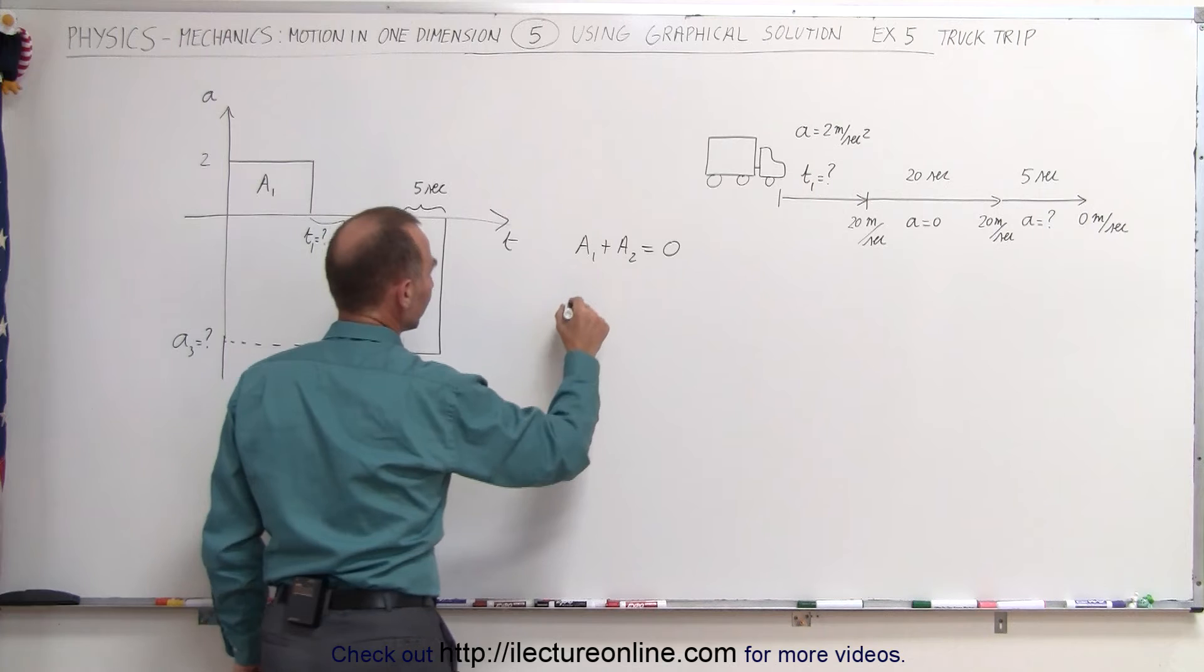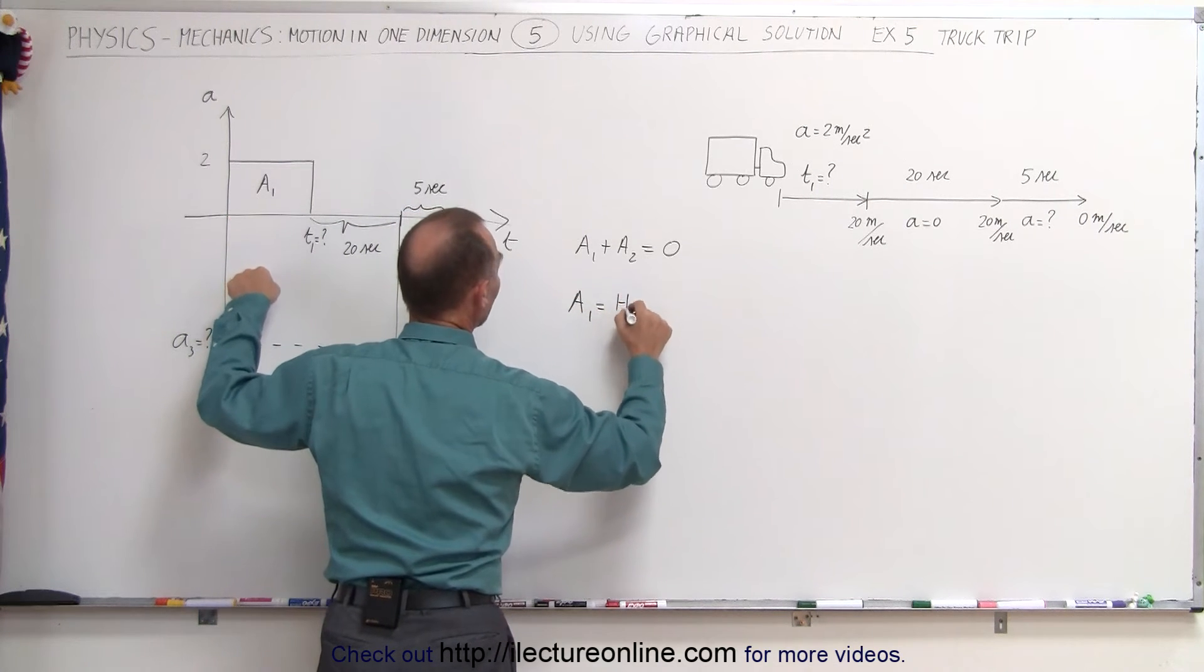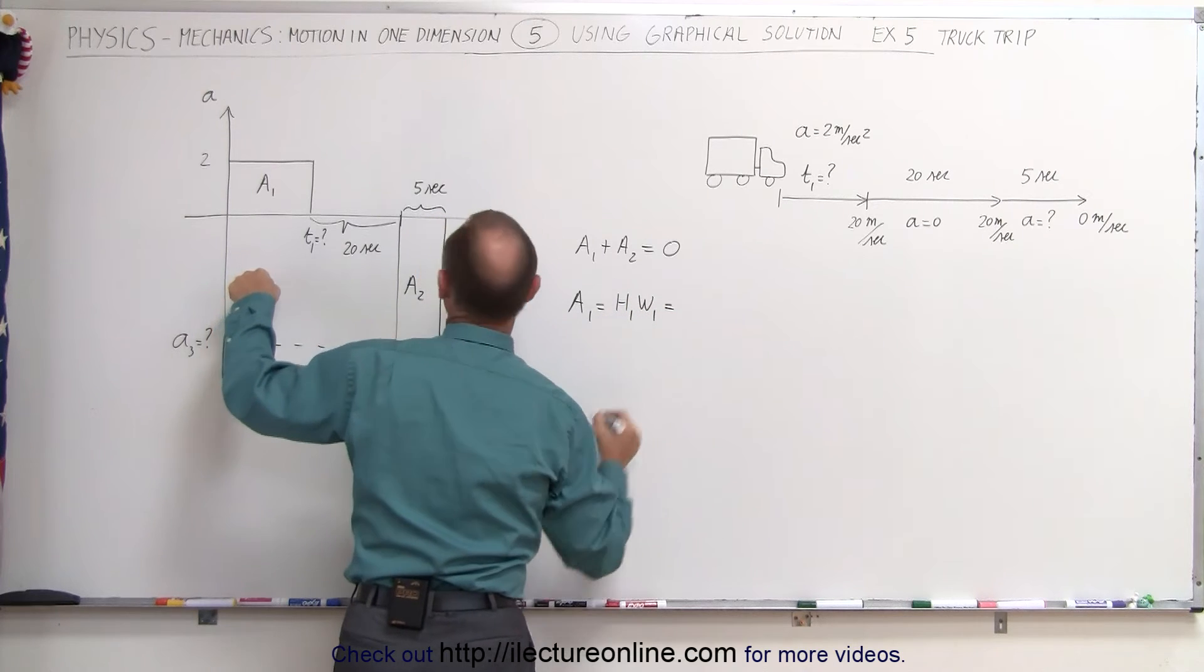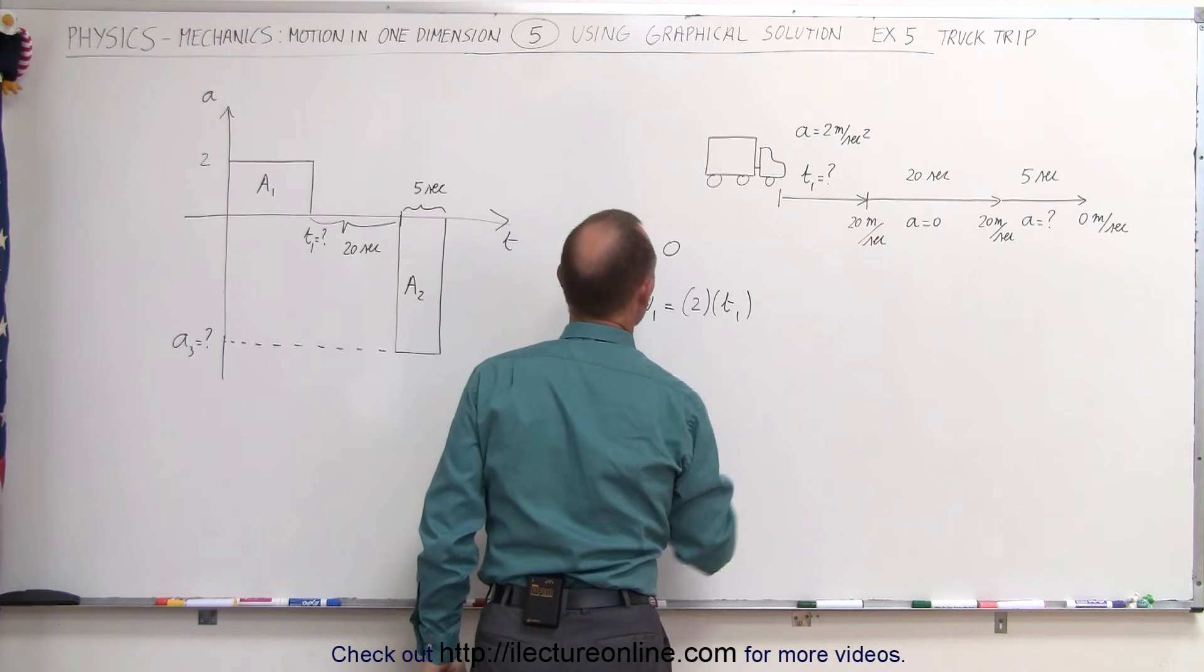And a1 is equal to the height times the width, that would be h1 times w1. The height would be 2 meters per second squared and the width would be t1 which we don't know.